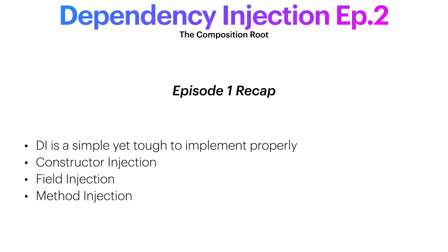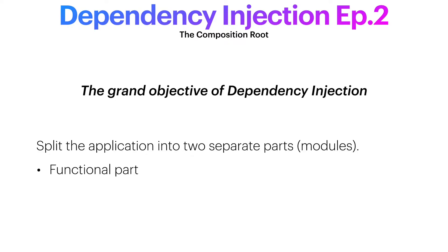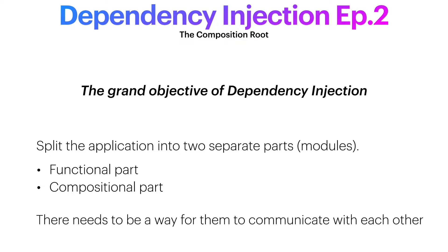But what's the grand objective of dependency injection? Its grand objective is to separate your application into two parts: the functional part, where your logic is put, and the compositional part, the part where all of your beautiful classes that you wrote will get instantiated and wired together. Then those two separate and independent parts will need to have a way of communicating with each other. This is dependency injection at the highest level — a separation of concerns.